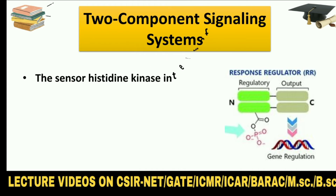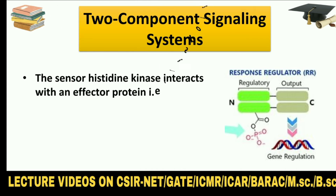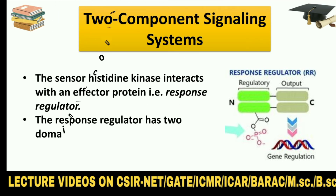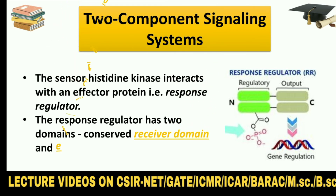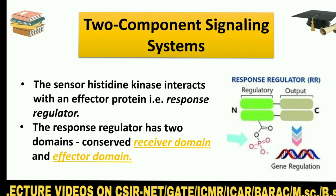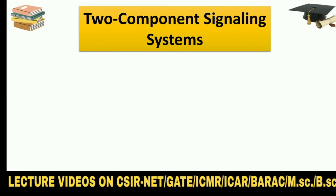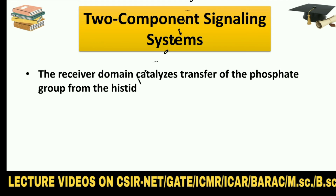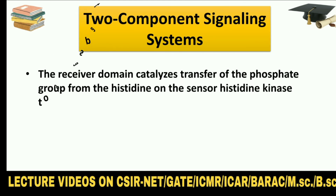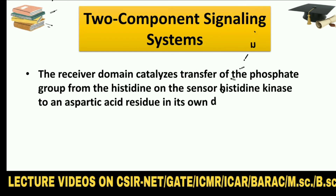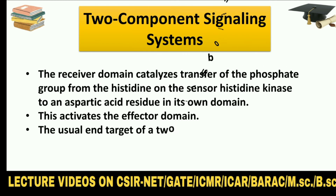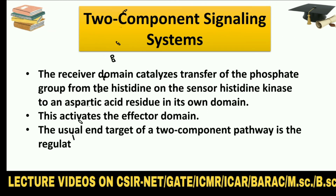The sensor histidine kinase interacts with an effector protein, i.e., the response regulator. The response regulator has two domains: a conserved receiver domain and an effector domain. The receiver domain catalyzes transfer of the phosphate group from the histidine on the sensor histidine kinase to an aspartic acid residue in its own domain, which activates the effector domain. The usual end target of a two-component pathway is the regulation of gene transcription.